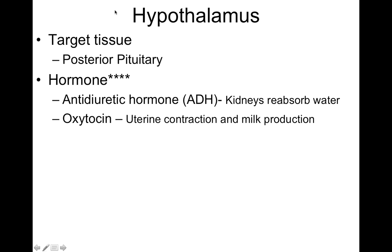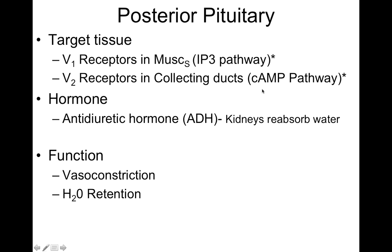The hypothalamus targets the posterior pituitary and causes it to release antidiuretic hormone and oxytocin. Oxytocin causes uterine contraction and milk production. Antidiuretic hormone — which we'll discuss more in the urinary system — causes the kidneys to reabsorb water.